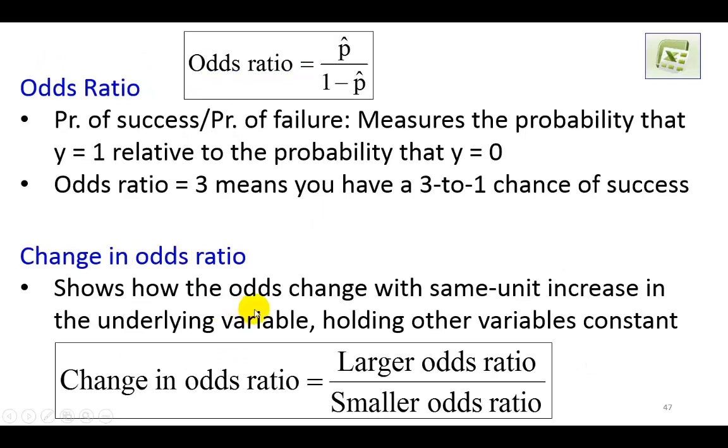Now, I'm also going to show calculations for the odds ratio and changing odds ratio. Odds ratio, as you see here, is the ratio of the probability of success to the probability of failure, as it were, and measures the probability that y equals 1 relative to the probability that it's not. And as an example, if the odds ratio is 3, then it tells us that you have a 3-to-1 chance of success. So, the larger the odds ratio, as you would imagine, the greater the chances of success.